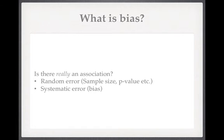We have to ask, when we've found an association, whether there really is one. There are a few things which can mean that what initially seems like an association — what seems like an exciting result — turns out not to be. The first one is random error. We're not going to talk about this in detail because we've covered it previously. We've talked about type one and type two errors. We've talked about p-values: if we have a p-value of 0.05 then the difference could still have been observed merely by chance. Even a p-value of 0.001 could still have been observed by chance — that would be random error.